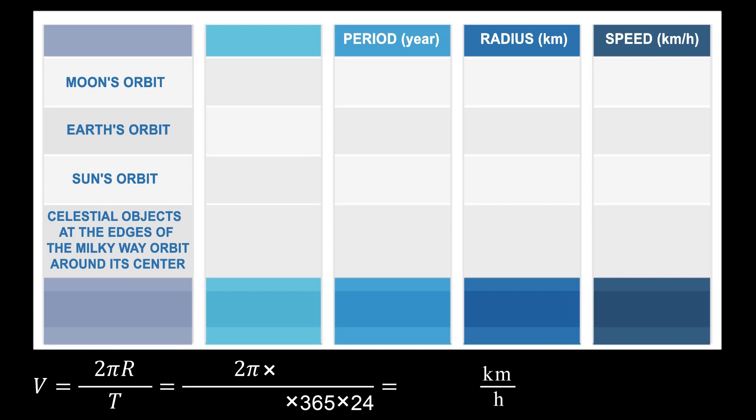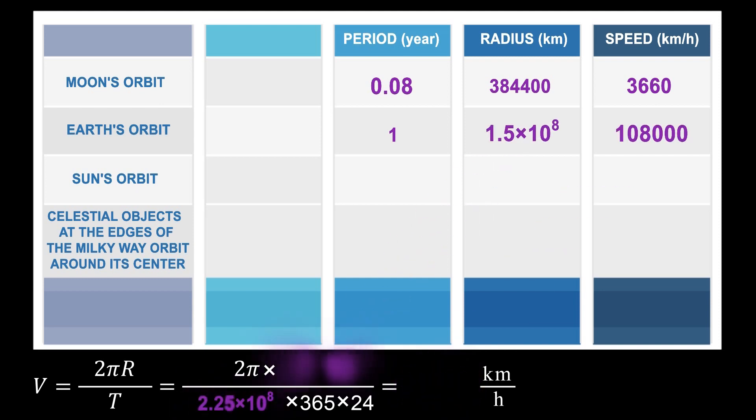The rotation period of the moon is about one month or 0.08 year and the rotation radius is about 10 to the power of 5 km. That being said, the speed is around 10 to the power of 3 km per hour. As the radius increases, the speed increases.